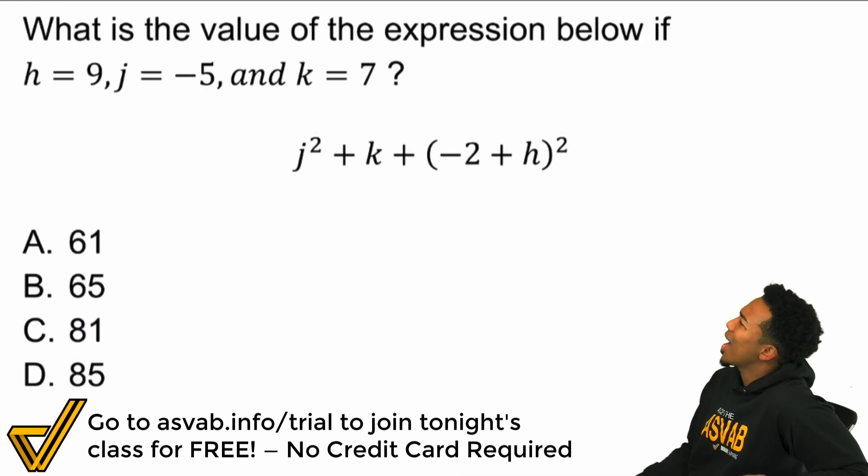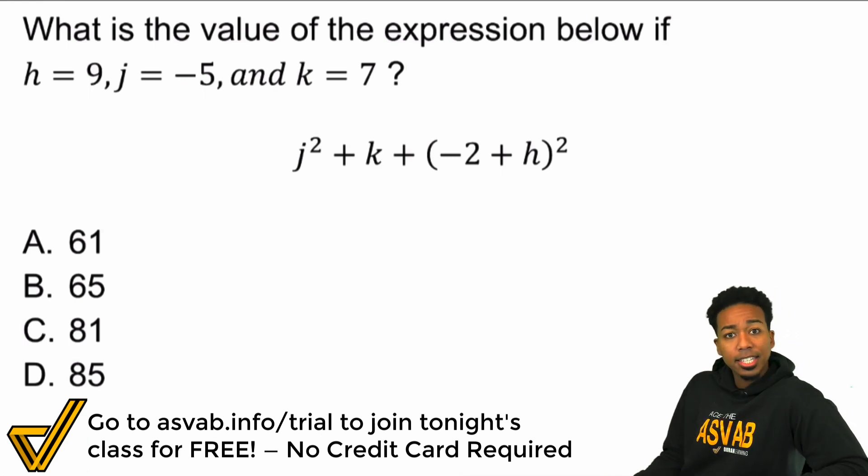So what is the value of the expression below if h equals 9, k equals 7, and j equals negative 5? So h is 9, j is negative 5, and k is 7.